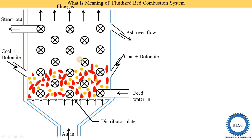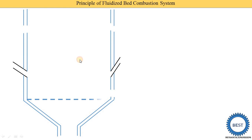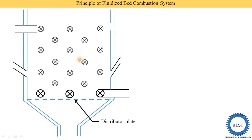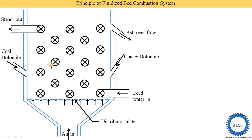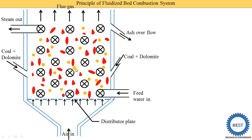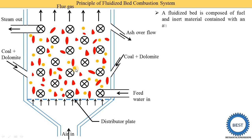This is the image of the packed bed combustion system. Now we understand the fluidized bed combustion system. In the packed bed combustion system, the coal and dolomite are very near to each other and near to the distributor plates. But in the fluidized bed combustion system, the coal and dolomites are suspended in the air. How are they suspended in the air?